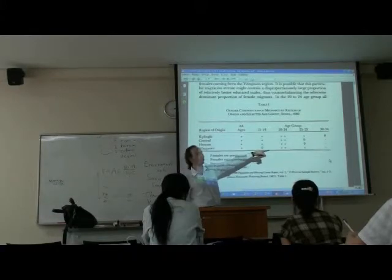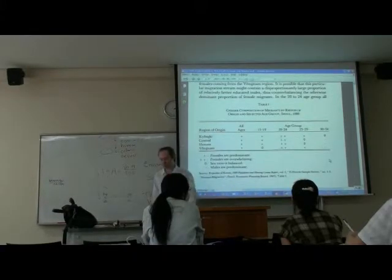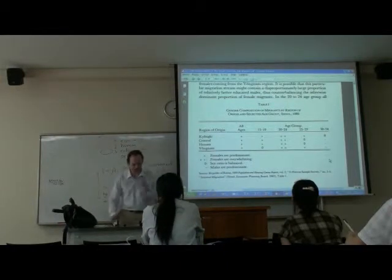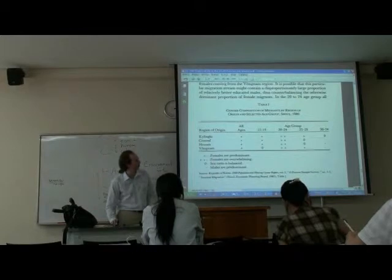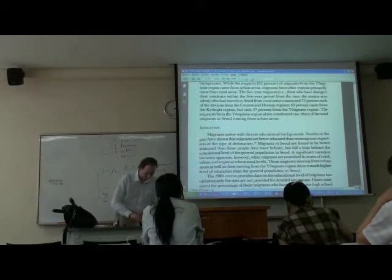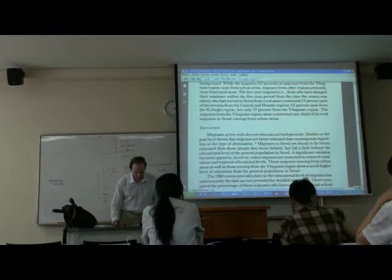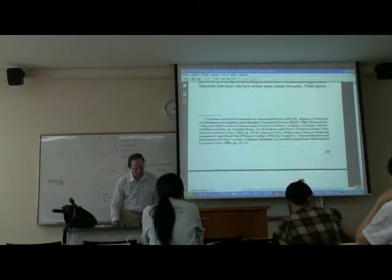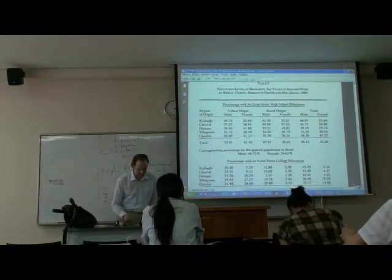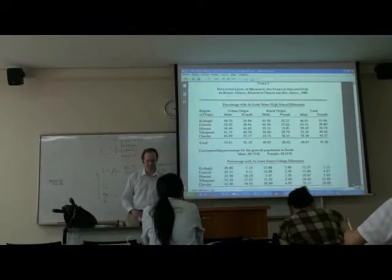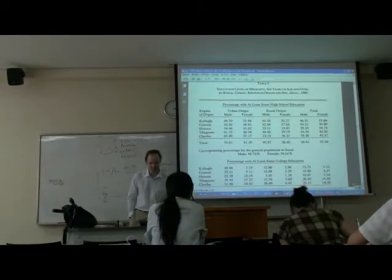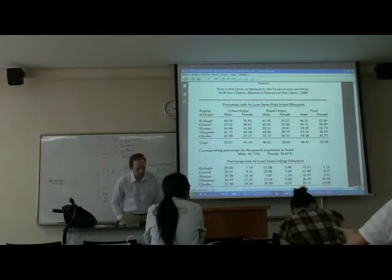Males are predominant only if they're much older. So youthful females are flying to Seoul. And older males, maybe. Table 2 is on page 30. Education level of migrants, six years of age and over, by a rural urban region of origin and sex in Seoul, 1980.